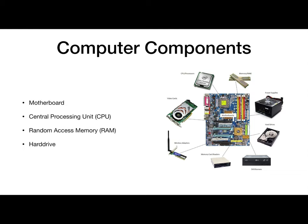The central processing unit, or CPU, is the component containing all of the processing information, allowing the computer to carry out commands or sequences. For example, when you click to open an application, that command is sent to the CPU and carries out the next necessary steps. Going back to the highway analogy, if you give a driver an address where you need to go, the driver acting as a CPU will process the information and begin to drive in the right direction.